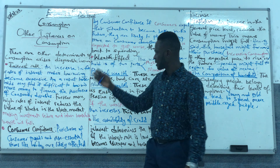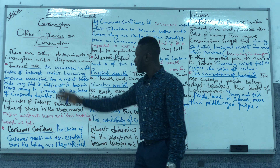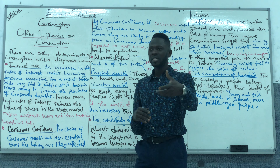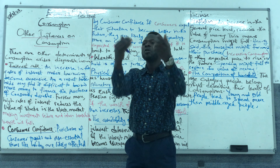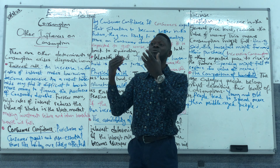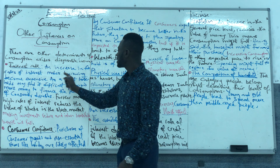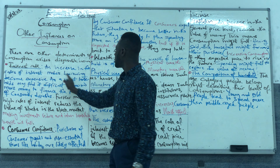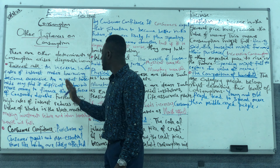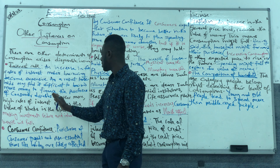There are other factors such as interest rates. Interest rates refer to the amount of money you have to pay to borrow money from the bank, which can also determine the amount of money still available for you to spend. An increase in interest rates makes borrowing become expensive. As a result, we find it difficult to borrow money to finance the purchase of consumer goods.